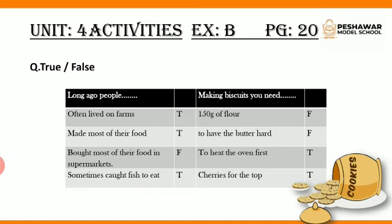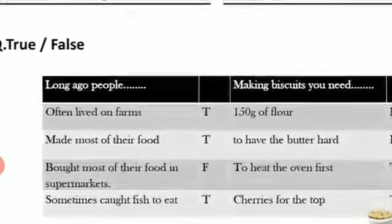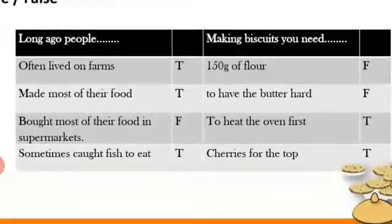Activities, Exercise B, page 20. Exercise A on page 20 is question answers which you will do on your note copies from the notes. True or False: Long ago people often lived on farms — true. Made most of their food — true. Bought most of their food in supermarkets — false. Sometimes caught fish to eat — true.